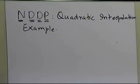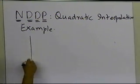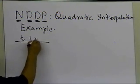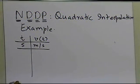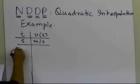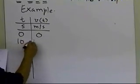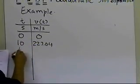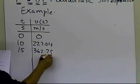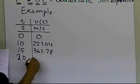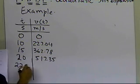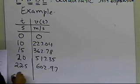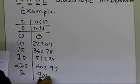This is the same example as we have taken for linear interpolation. We're given the upward velocity of a rocket: time is in seconds, velocity is in meters per second. The data points are: at 0 seconds, velocity is 0; at 10 it is 227.04; at 15 it is 362.78; at 20 it is 517.35; at 22.5 it is 602.97; and at 30 it is 901.67.